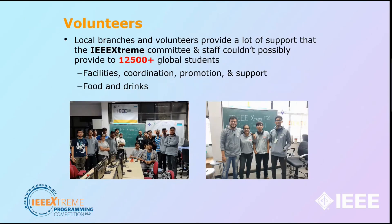Next, the volunteers — this is a very proud moment for us. Local branches and volunteers provide a lot of support that the IEEE Xtreme community and staff couldn't possibly provide to over 12,000 global students. IEEE SIAS-GST provides the facilities, coordination, promotion, support, food, drinks, and everything to you during the competition day. As you can see from the IEEE Xtreme 13.0 photos from 2019, volunteers serve as the backbone of conducting IEEE Xtreme in the college. Don't worry — we've got your back. IEEE SIAS-GST always has your back during the competition day.